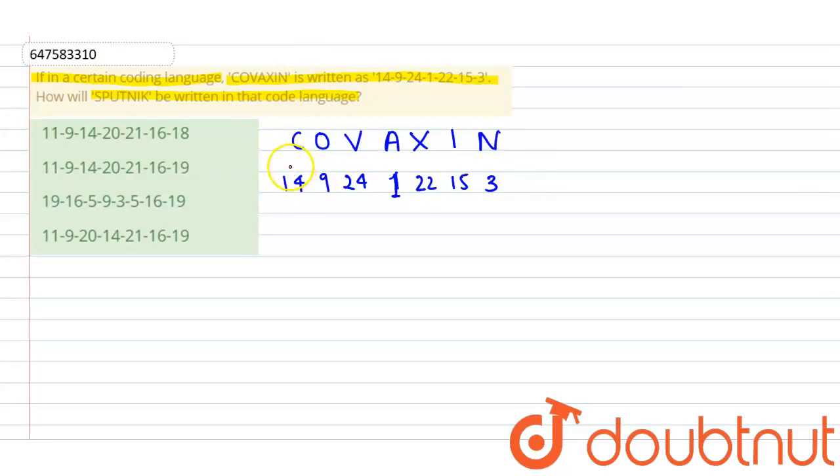14 is N, 9 is I, 24 is X, 1 is A, 22 is V, 15 is O, and 3 is C. So what we can see is, this is Covaxin written backwards: C-O-V-A-X-I-N.